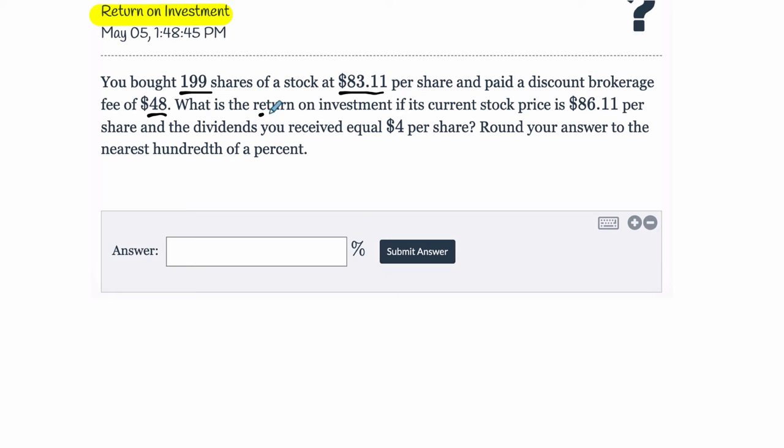We want to know what is the return on investment if the current stock price is $86.11 per share. So it's gone up. And you've gotten dividends equal to $4 per share. So they're paying you $4 for every share you own.